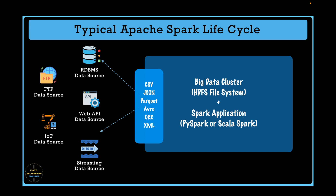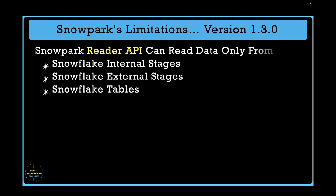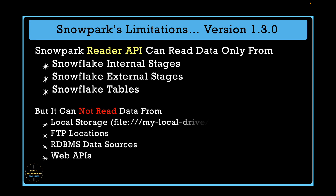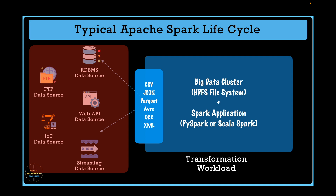Once the data is landed to the raw or stage location, data transformation jobs written in a Spark application are executed to perform transformation and computational activities. Now let's take Apache Spark out of this picture and replace it with Snowpark, and evaluate the limitations of Snowflake Snowpark API and library using an Apache Spark lens. Snowpark's Reader API can read data only from internal stages, external stages, and tables within Snowflake. But it cannot read data from local storage, FTP locations, RDBMS data sources, and web APIs. This means the integration layer needs to be re-architected whenever you consider an Apache Spark to Snowpark migration.